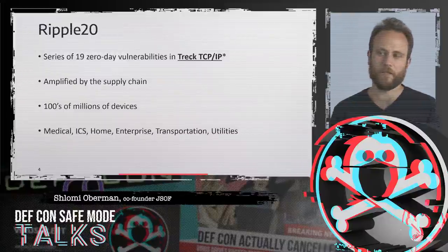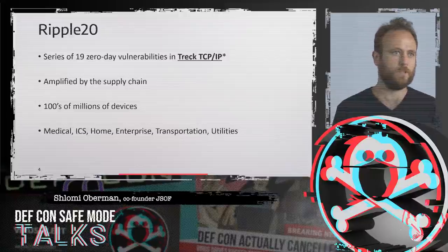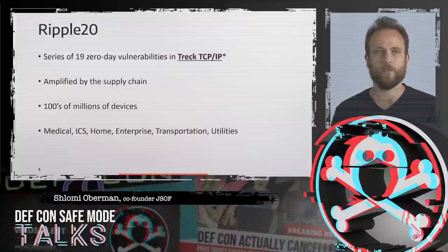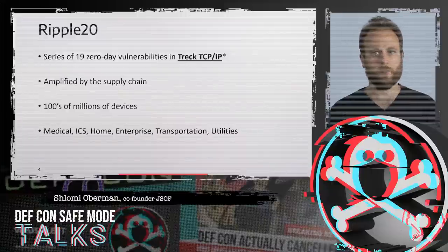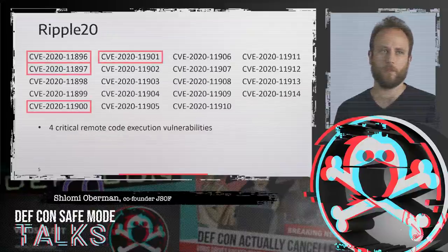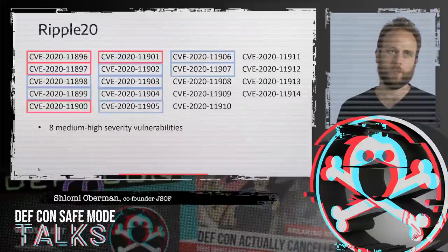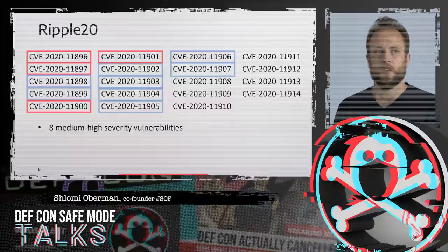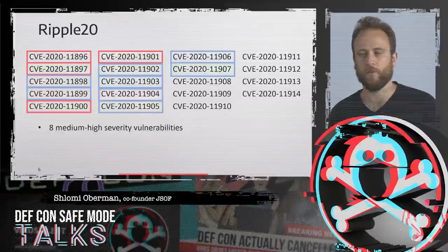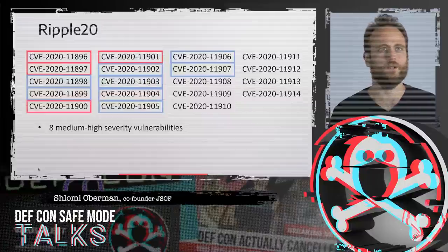These vulnerabilities were amplified by the supply chain to affect hundreds of millions of devices in all kinds of verticals — medical, critical devices, industrial control, enterprise, and a bunch of others. Out of the Ripple20 vulnerabilities, four are critical remote code execution vulnerabilities. An additional eight CVEs are medium to high severity vulnerabilities, some of which could also potentially lead to remote code execution, pending further research.